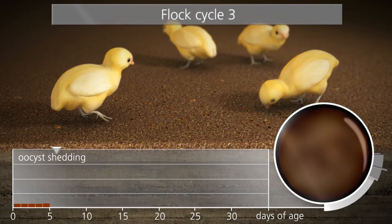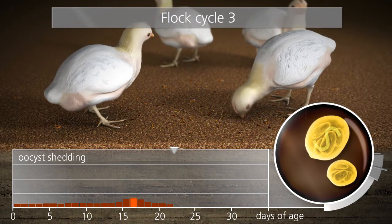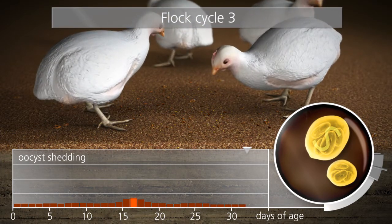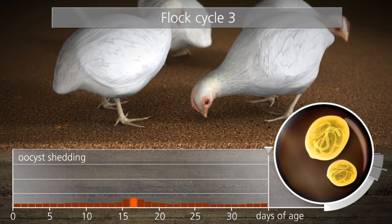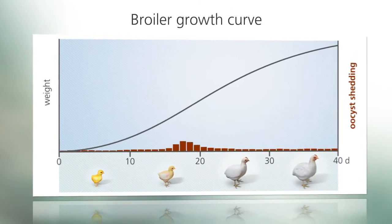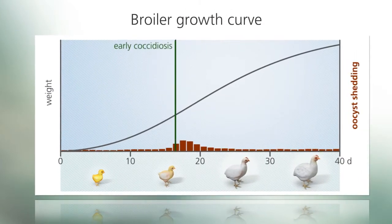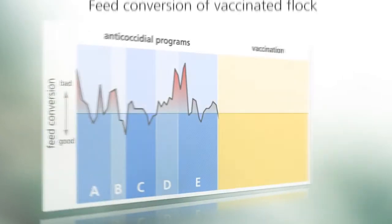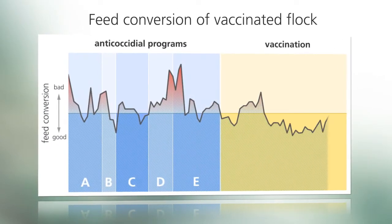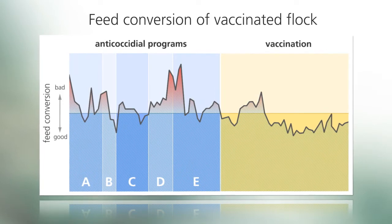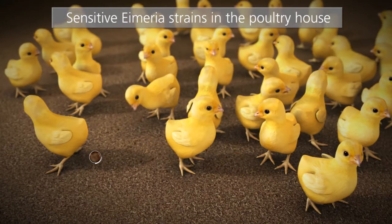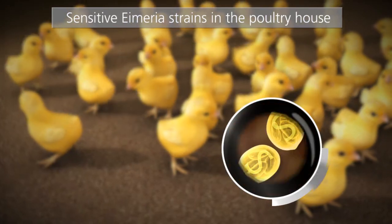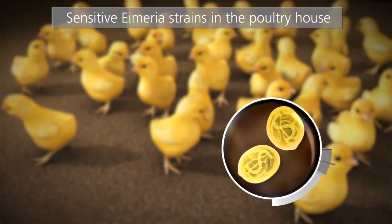Bird growth becomes more homogenous, and once birds are shedding fewer oocysts, the ammonia in the litter helps to reduce the overall coccidiosis challenge in the house further. Vaccination shifts the coccidiosis exposure window earlier and reduces the exposure level. Uniformity of the flock and of performance improves. The Eimeria strains still populating the broiler house come from birds vaccinated with Coccivac and are now sensitive to anti-coccidials.